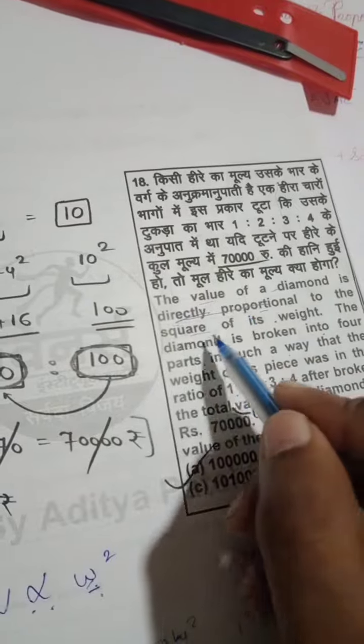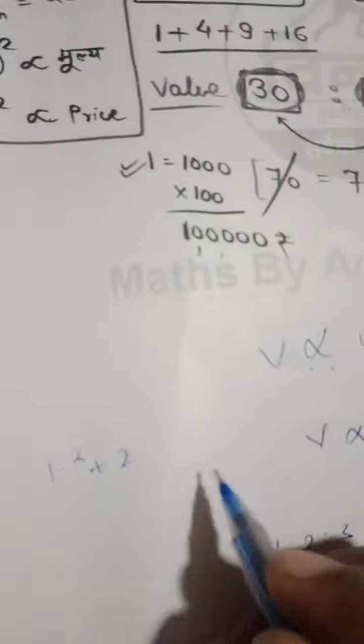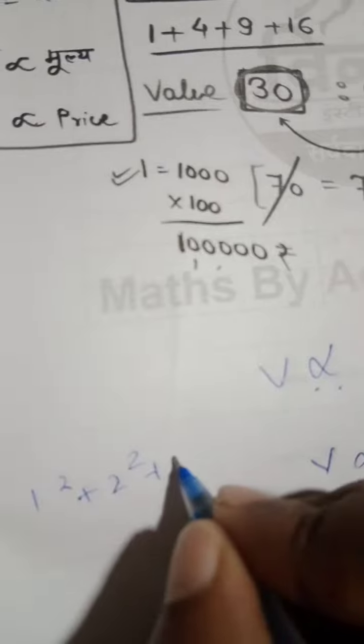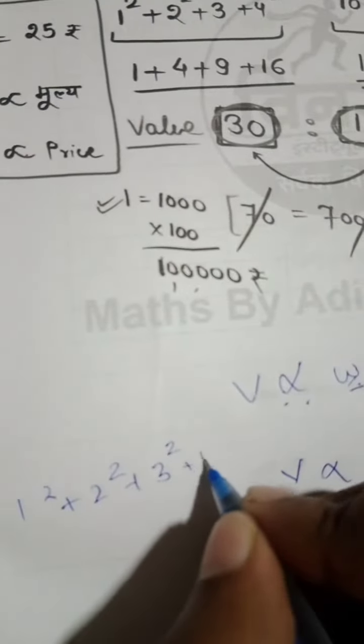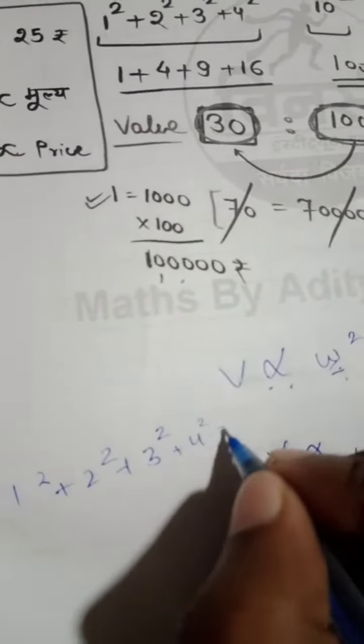So we are going to do: the value of diamond is directly proportional to the square of its weight. 1 square plus 2 square plus 3 square plus 4 square.